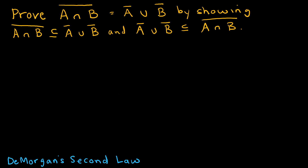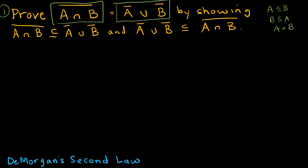So let's get started. I have DeMorgan's second law on the next several slides and we're going to prove it in several different ways. The first way is essentially showing that if A is a subset of B and B is a subset of A, then A must equal B. We first have to show that the complement of A intersect B is a subset of the union of the complement of A and the complement of B.